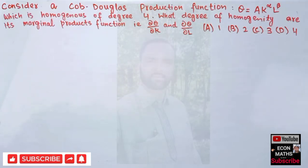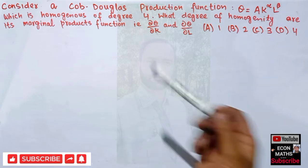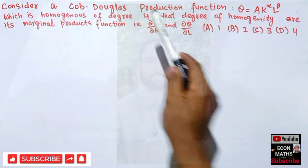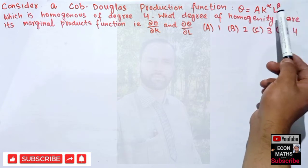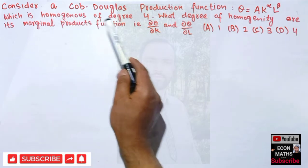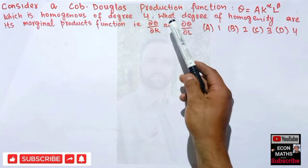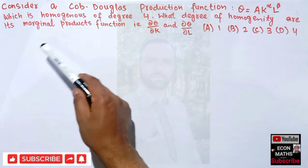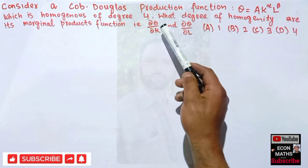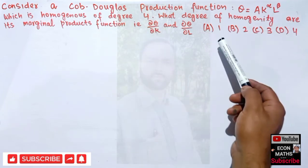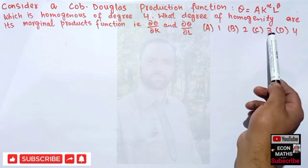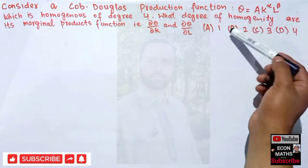Hi, this is Halal. In this video on mathematical economical series, we will try to solve a numerical on the homogeneity of a Cobb-Douglas production function. The question is: consider a Cobb-Douglas production function Q = a · K^α · L^β, which is homogeneous of degree 4. What degree of homogeneity are its marginal product functions? The options are 1, 2, 3, or 4.